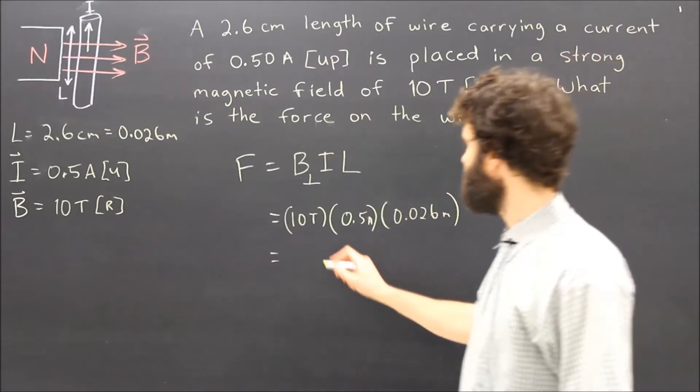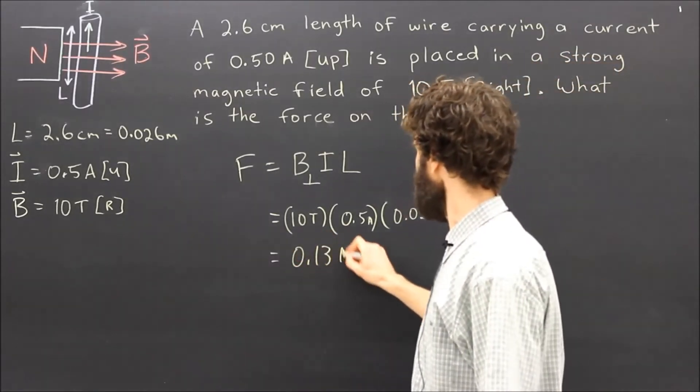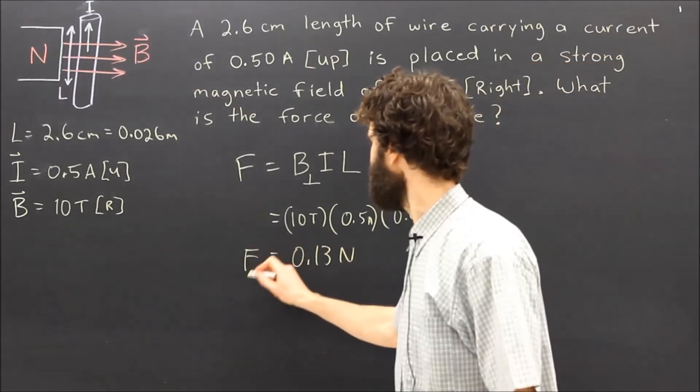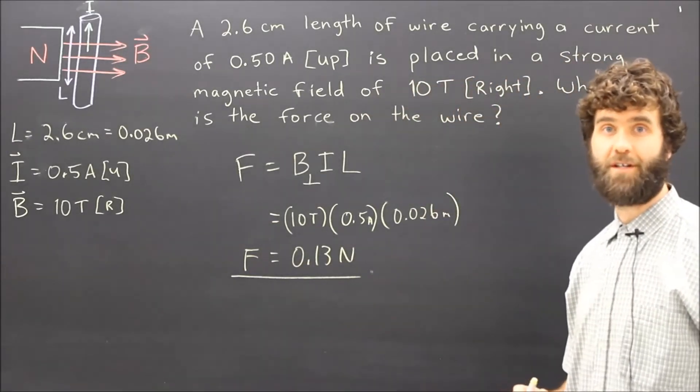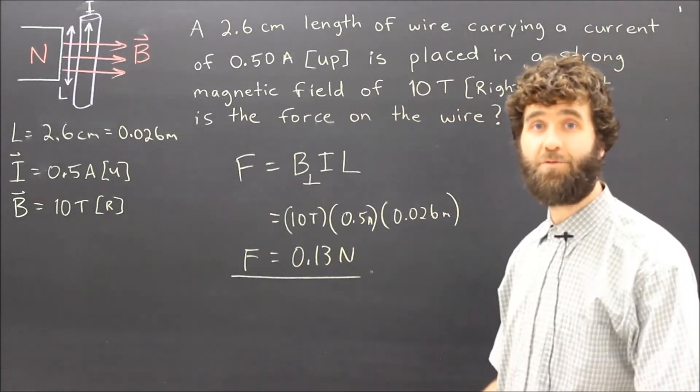Once we calculate, we get an answer of 0.13 newtons of force, and now we want to determine the direction of that force. So we need to use the right hand rule number three.